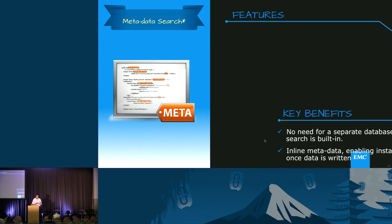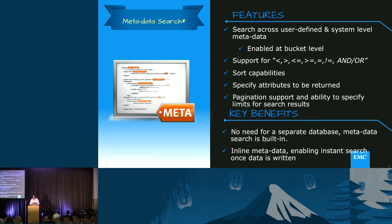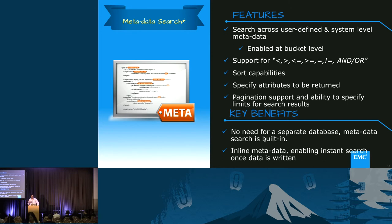A key capability coming next month is metadata search — the ability to search user-level and system-level metadata, which is becoming a trend in the market. We were just at a session yesterday about the OpenStack metadata search API, and that's definitely on our horizon. You can enable search at the bucket level and do scenarios like: give me data that has changed in the past 24 hours, or give me all objects with a city attribute equal to Tokyo. We support predicates, sort capabilities, the ability to specify which attributes to return, and pagination support.